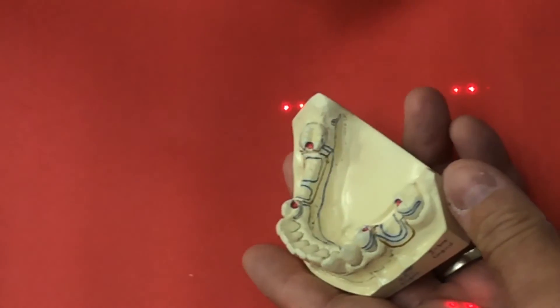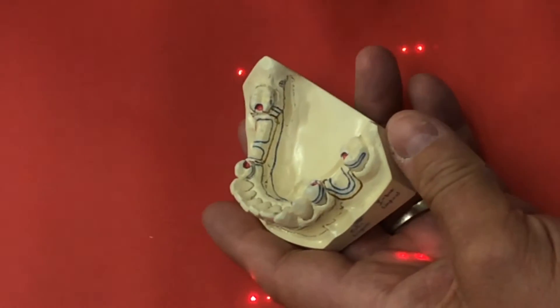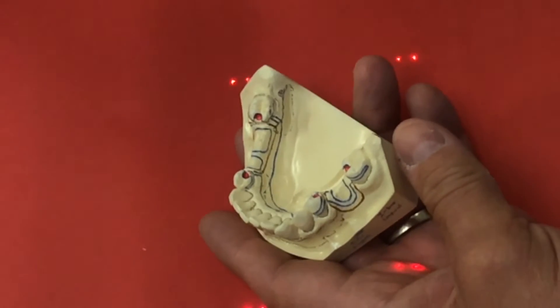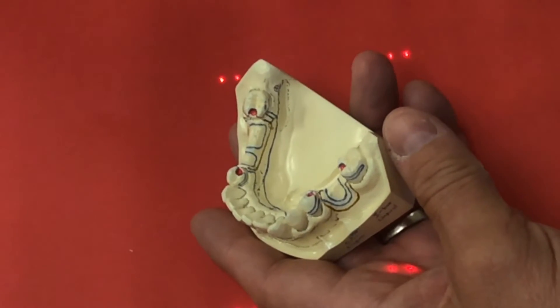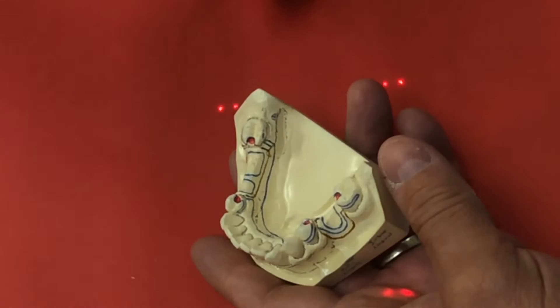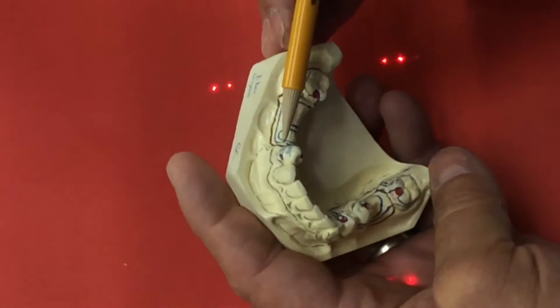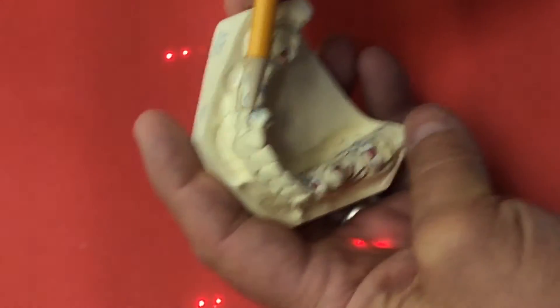We're not talking about Class 1s and Class 2s, so we're not talking about RPIs. Because RPIs by definition say it's a mesial rest and a distal guide plane and an I-bar. If we wanted to use an I-bar up here, we could use an I-bar up here.